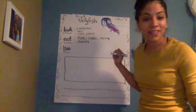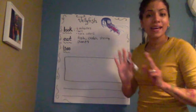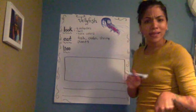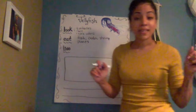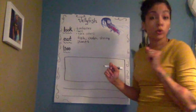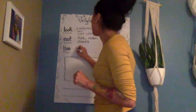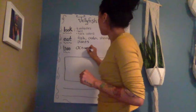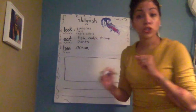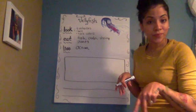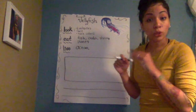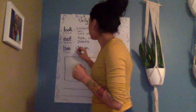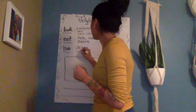Now the last way we can organize our writing is writing about where they live. We know that they live in the ocean. Do you remember where they lay their eggs? Close to the coral reef — and they lay eggs on the rocks, so they live near rocks.